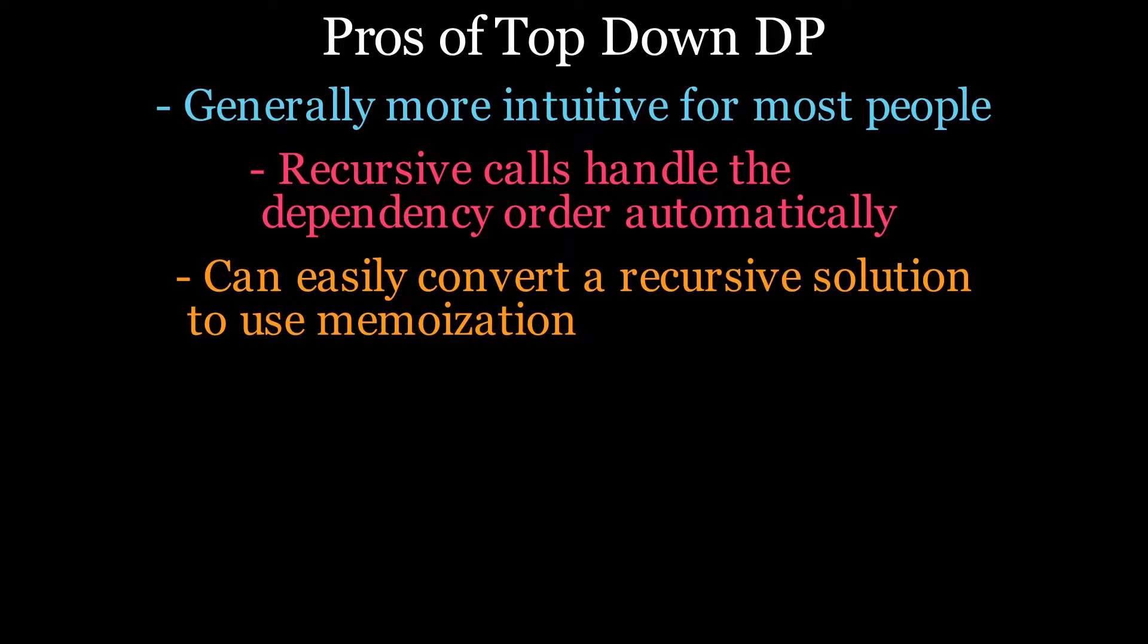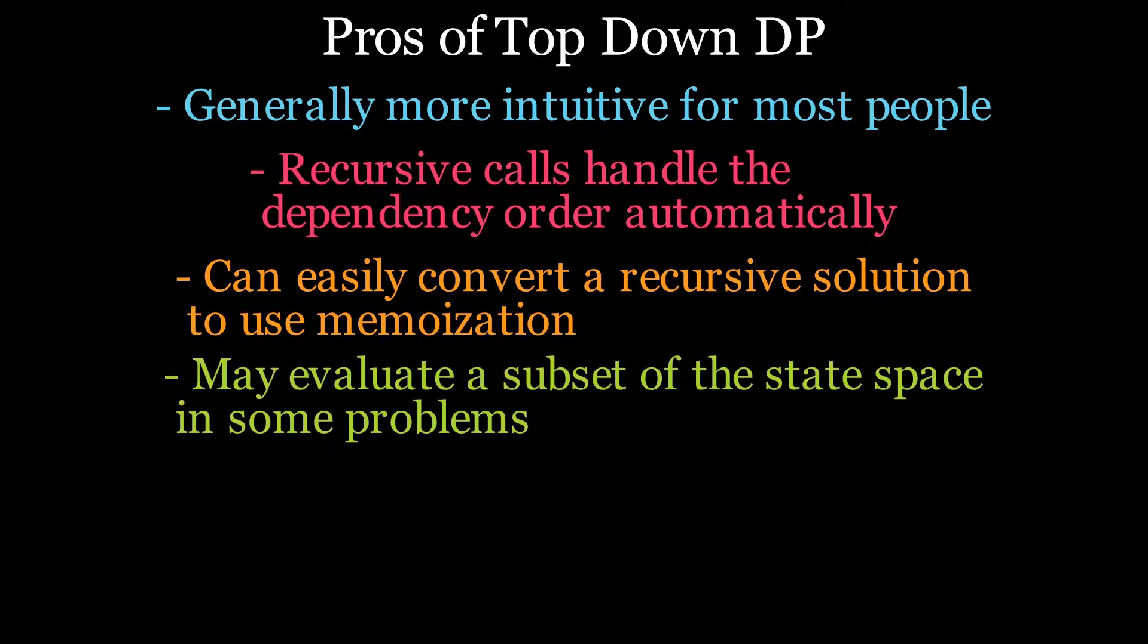For certain problems, unlike in the Fibonacci sequence, the top-down approach might be able to come to a solution by only visiting a small subset of the state space. You can see this with a knapsack problem, for example. But with the bottom-up approach, all preceding subproblems instead need to get blindly solved, irrespective of whether they're going to be needed for the end problem you're trying to solve.